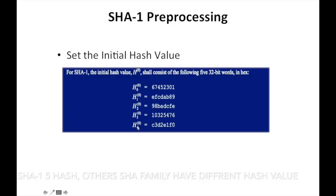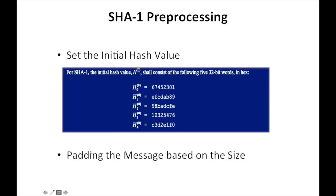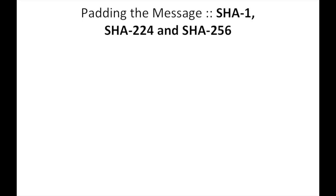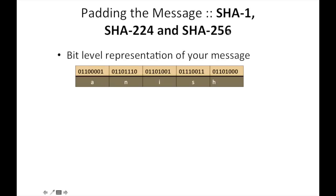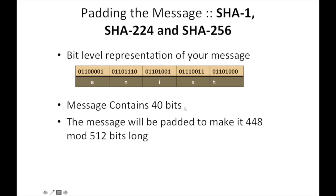The second pre-processing step is padding the message based on the size. I'll take one example where I have to pad a message given using SHA-1, SHA-224, and SHA-256. I have a given string Anish. I have represented it in binary form. This message contains 40 bits. I have to make this 512 bits long.